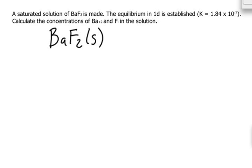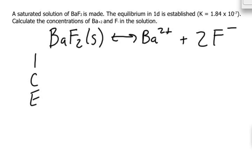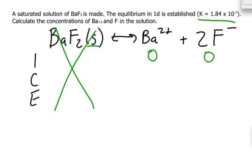It's going to form Ba²⁺ and 2F⁻. So if we write down our ICE chart: I, C, E. Again, we can quickly notice that this is a solid, so once again, this is out of the picture. We don't care. Usually we can assume the initial concentrations of these is zero, and all we're told is the K value. We want to find the final concentrations of Ba²⁺ and F⁻.